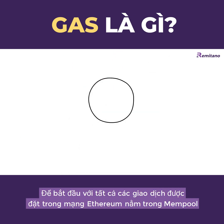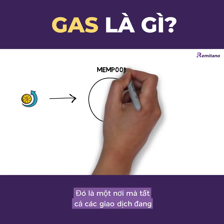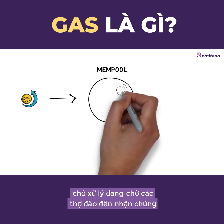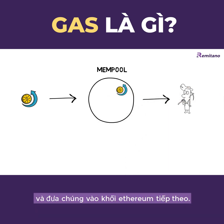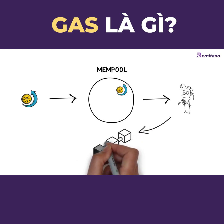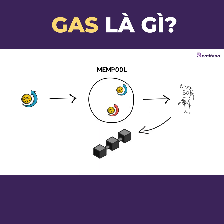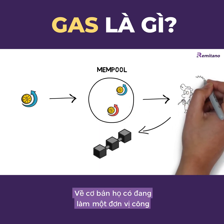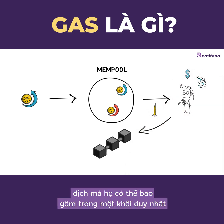All transactions sent to the Ethereum network land in the mempool. This is a place where all pending transactions are waiting for the miners to pick them up and include them in the next Ethereum block. Miners are incentivized to pick up transactions with the highest gas price first, as they are basically doing a fixed unit of work for a better price.